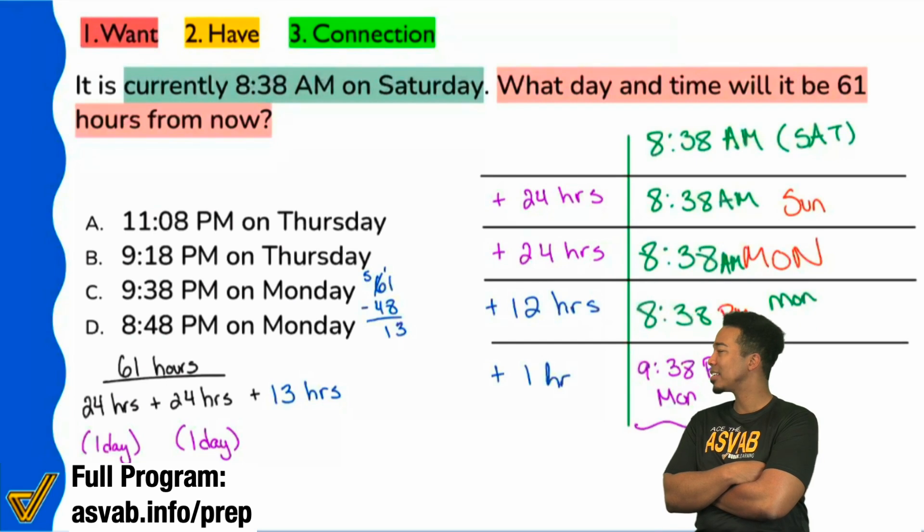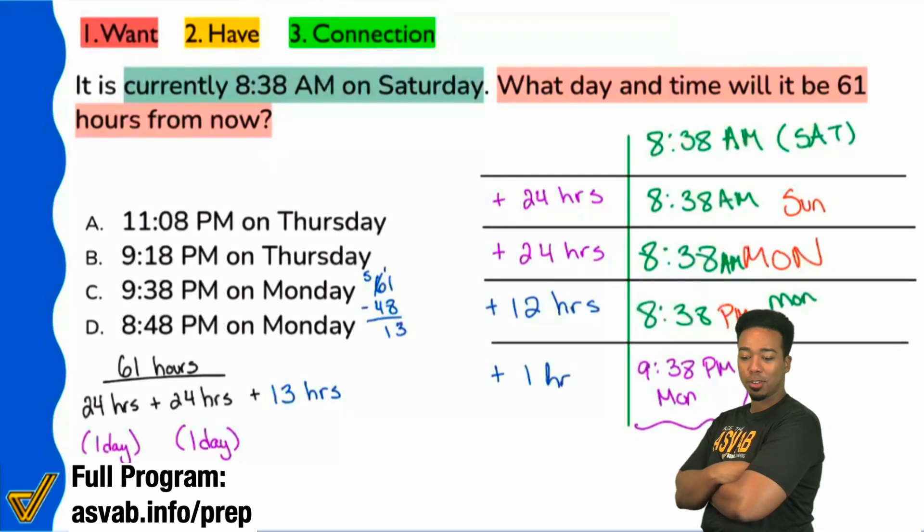If it's 8:38 AM on Saturday and we add 61 hours, which of these times is the only time that it could possibly be since we never changed the minutes? Which of these is the only answer that could be it?